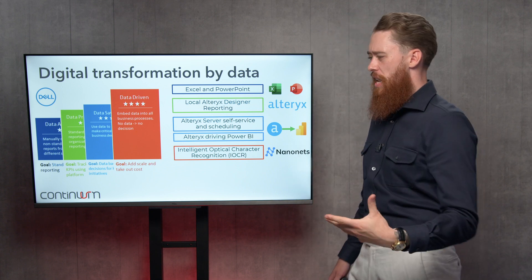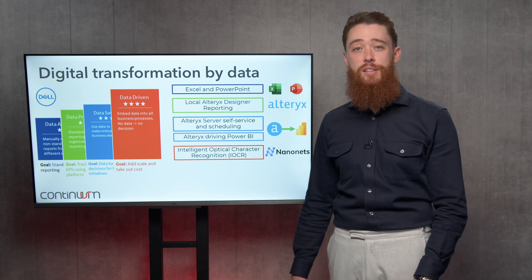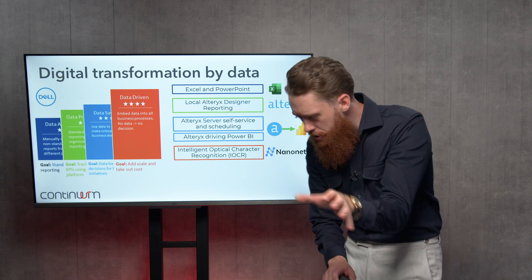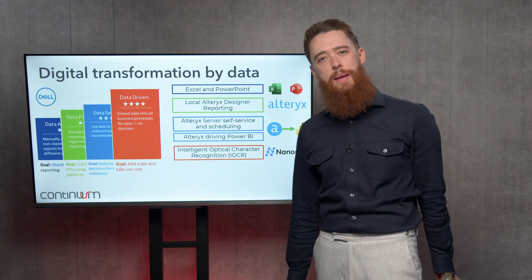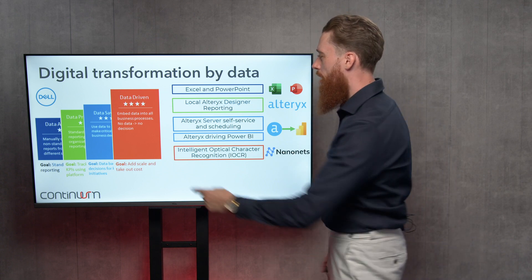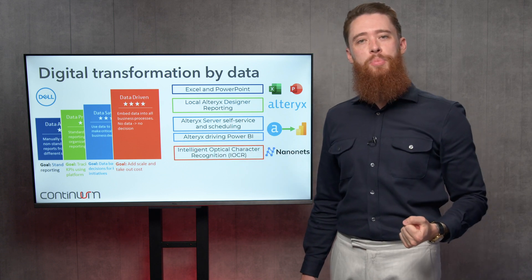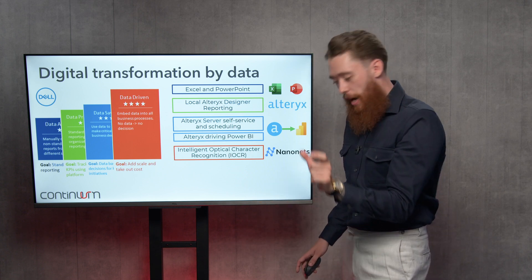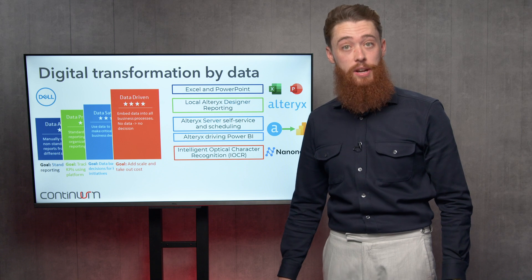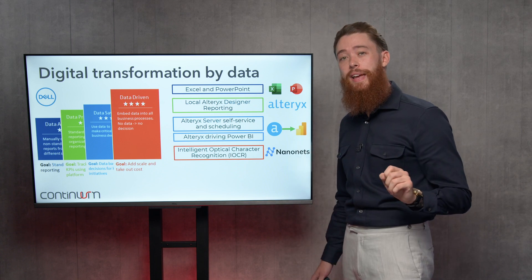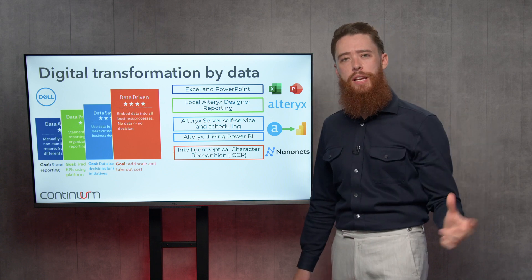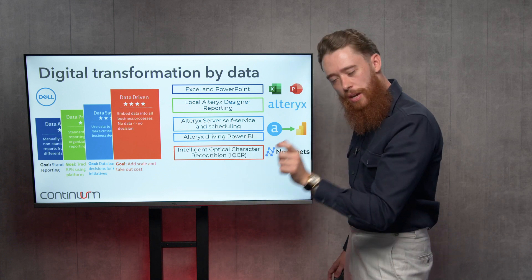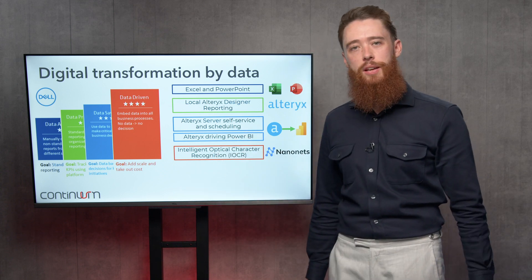What I-OCR does is unlock PDF data. You've got data coming in — invoices or suppliers providing you PDF data. I see it all the time: businesses going into their PDFs, copying, highlighting, pasting into an Excel sheet row by row, with teams of people doing that. Of course that's not scalable and certainly not data-driven. What Intelligent Optical Character Recognition does is scour those documents, pull out the data, and transcribe it into your systems directly.